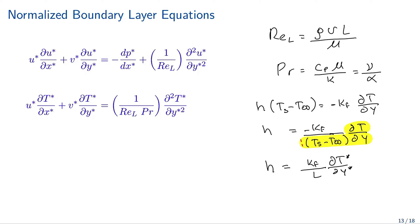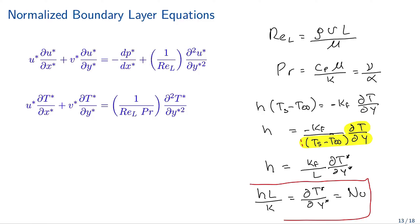Rearranging, H·L/K = dT*/dY*. This group H·L/K is called the Nusselt number — a dimensionless form of the heat transfer convection coefficient H. This is our new dimensionless number.